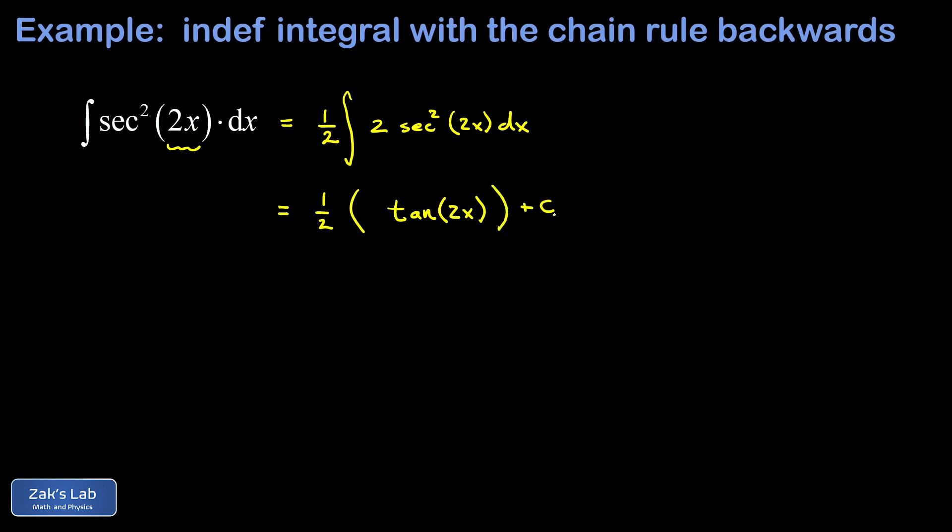But we want to be as general as possible here with this indefinite integral. So we throw in the plus c. And these extra parentheses are just kind of bothering me. So I want to rewrite the answer here in a little nicer form. So one half tangent 2x plus c. And that's it.